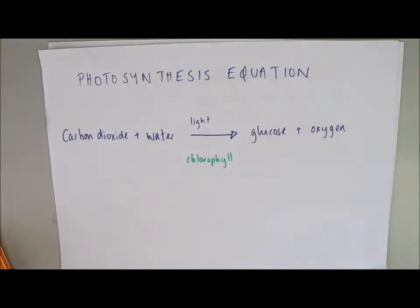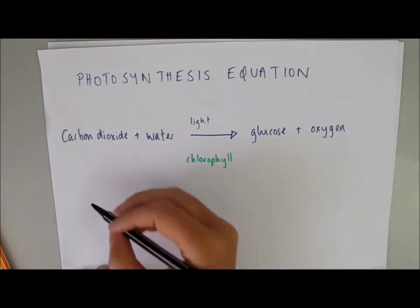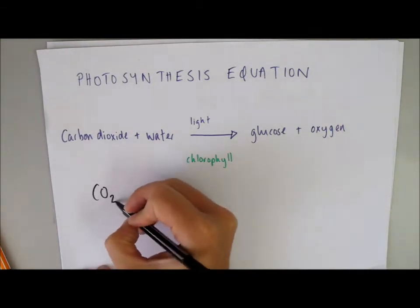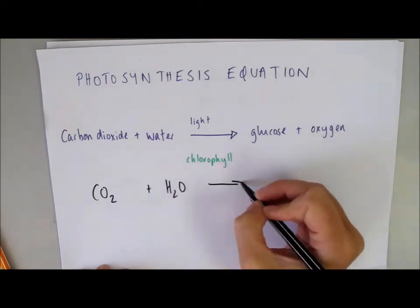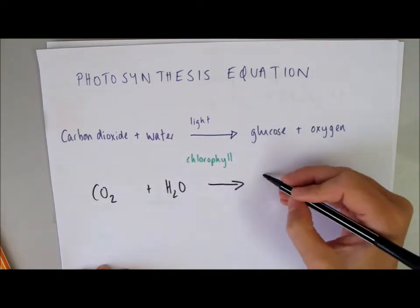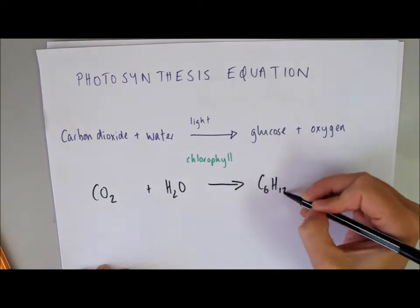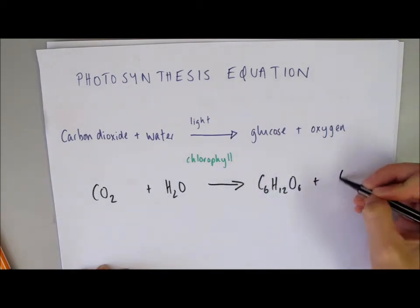Or, if you're going to do it in terms of symbols, carbon dioxide plus water in the presence of light and chlorophyll go to glucose plus oxygen. And to balance it, we need to add in the sixes.